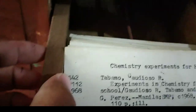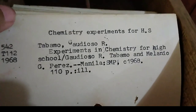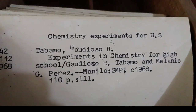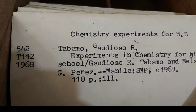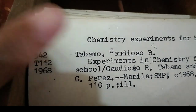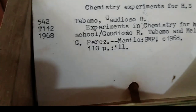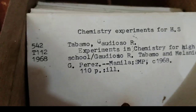Now we have an example of a title card. This is the tracing — 'Chemistry Experiments for High School' — that is the title of the book. Tabamo Gaujuso R. is the author. So the arrangement changes: what changes is that the title of the book is already written at the top. There is no tracing again because the title card is under the added entry — no tracing because this one is not a main entry.